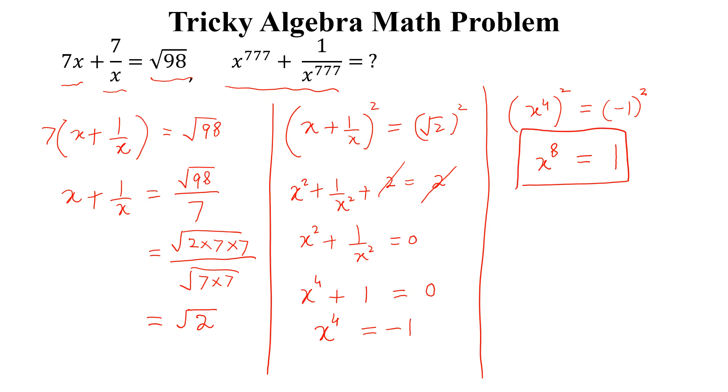Now we need to calculate this: x to the power 777 plus 1 over x to the power 777. We can write this as x to the power 776 into x plus 1 over x to the power 776 into x.